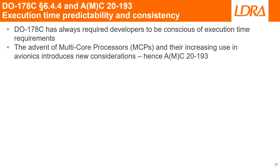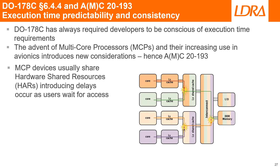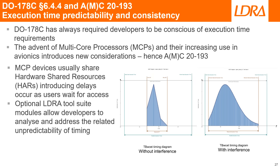Execution time has always been a consideration in the development of critical avionics applications. However, the advent of multicore processors or MCPs and their increasing use in avionics has introduced new considerations. AMC 20/193 was introduced to address these challenges. MCP devices usually share hardware resources, and this diagram shows how delays are introduced as shared memory users await access. Optional LDRA tool suite modules provide the means for developers to analyse and address the related unpredictability of timing.